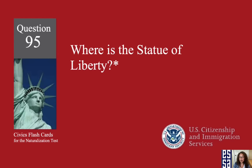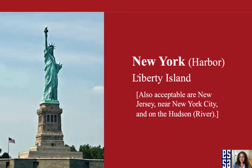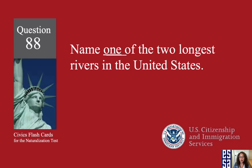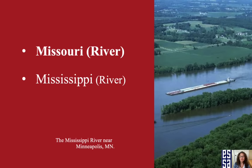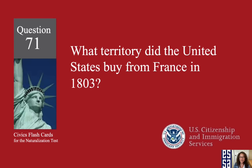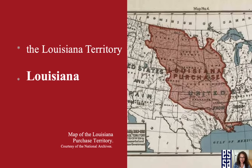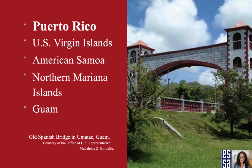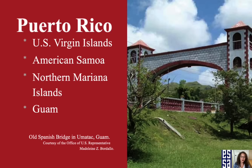Where is the Statue of Liberty? In New York. Name one of the two longest rivers in the United States: the Missouri River. What territory did the United States buy from France in 1803? Louisiana. Name one U.S. territory: Puerto Rico.